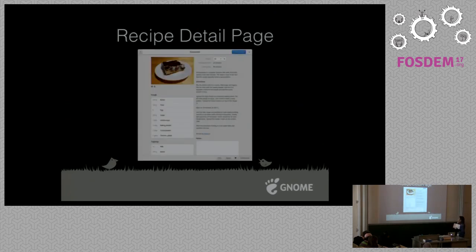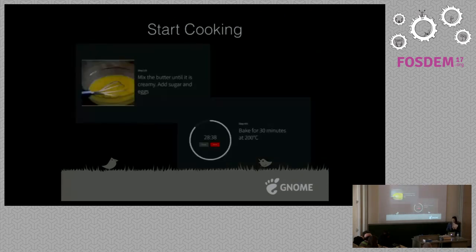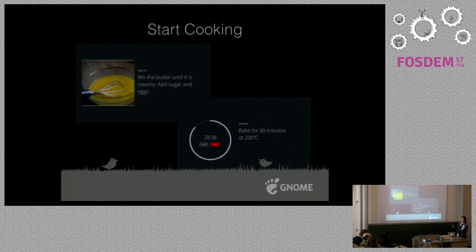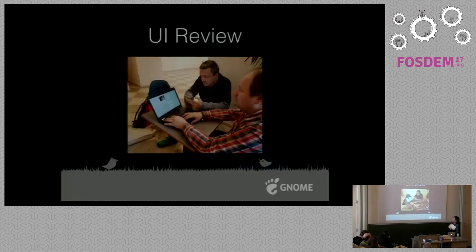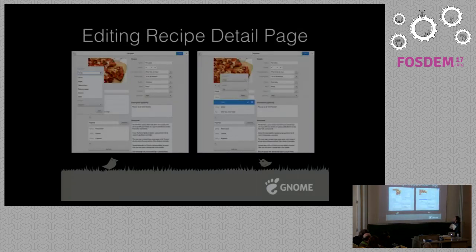On the recipe detail page we have a start cooking button. Once you press start cooking, a full-screen view appears and you can follow your process step by step — because you might have messy hands you can just scroll through the screens with one hand. This is the UI reveal that was done in Bruma last week with Matthias, Thomas and Yakub, where they found that it's quite difficult to add a new recipe and edit one, so we are planning to simplify that process.